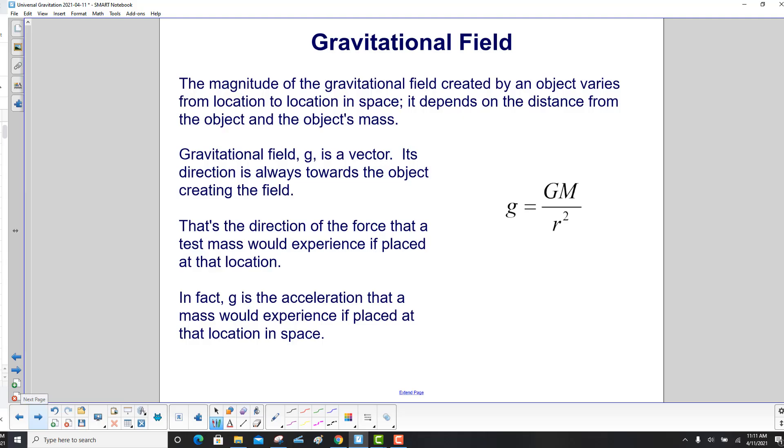The magnitude of the gravitational field created by an object, in this case big M, varies from location to location in space. It depends on the distance from the object and the object's mass. Gravitational field little g is a vector. Its direction is always towards the object creating the field.